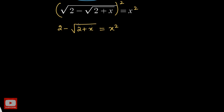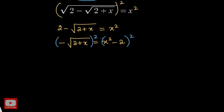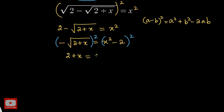Now we need to get rid of the remaining radical. We isolate it by moving the 2 to the other side, giving: minus square root of 2 plus x equals x squared minus 2. We then square both sides again. The negative squares to give a positive, and the square root cancels with the square, leaving 2 plus x on the left. The right side expands using (a − b)² = a² + b² − 2ab, giving x⁴ + 4 − 4x².